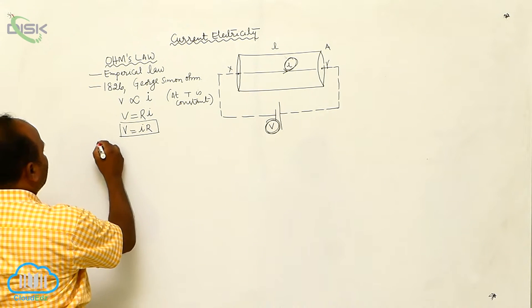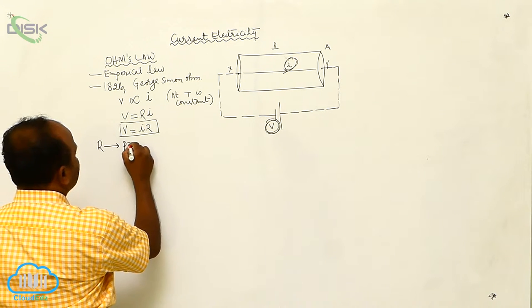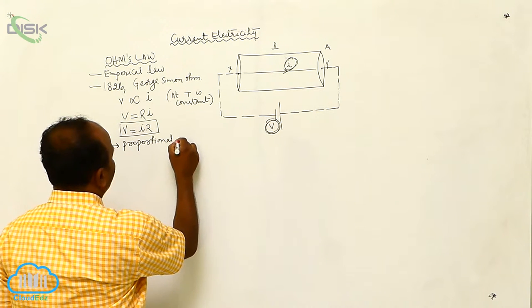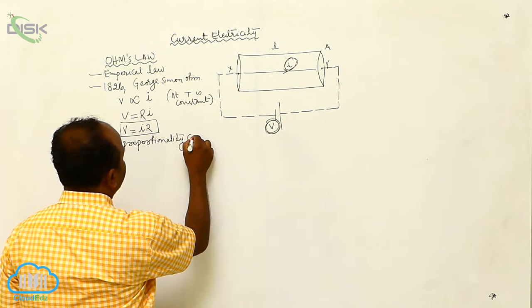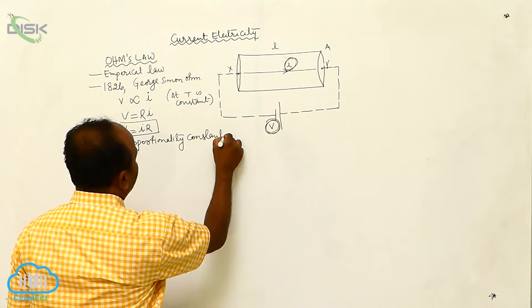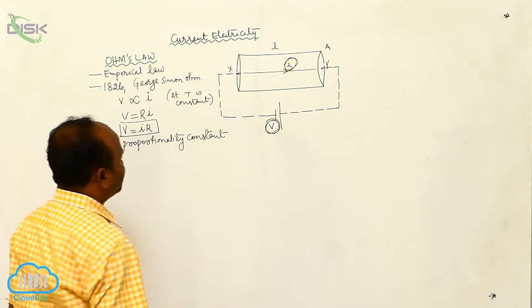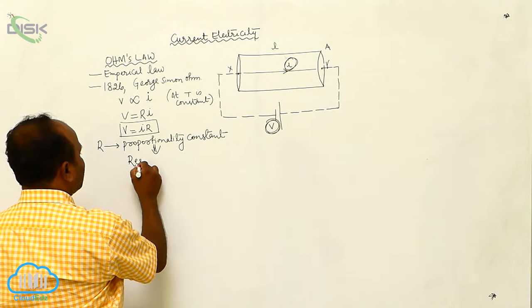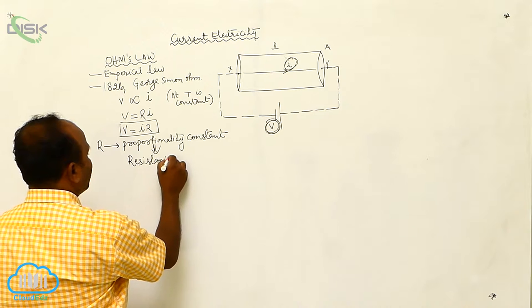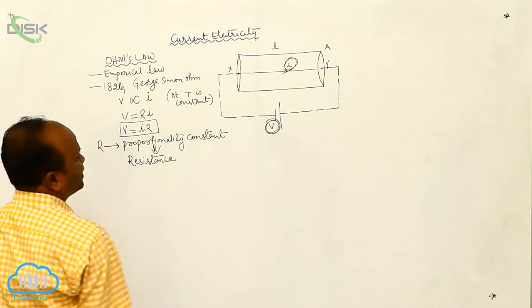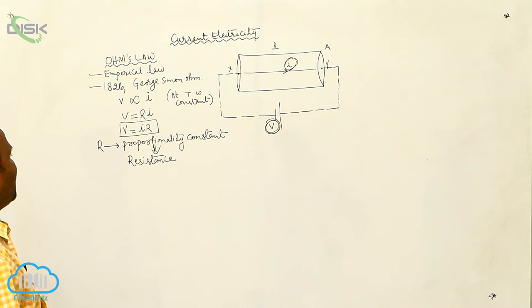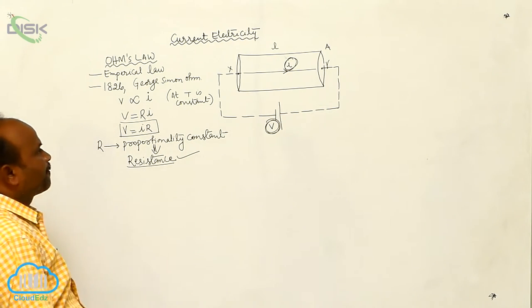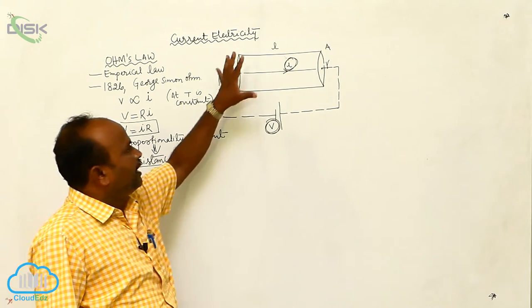This R is called the proportionality constant. This proportionality constant is called resistance. I will discuss more about resistance later.